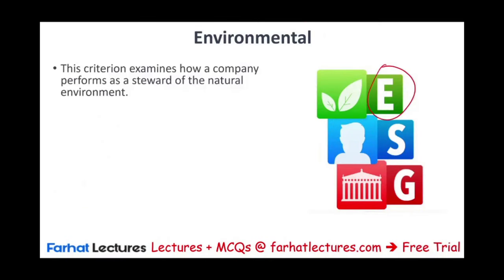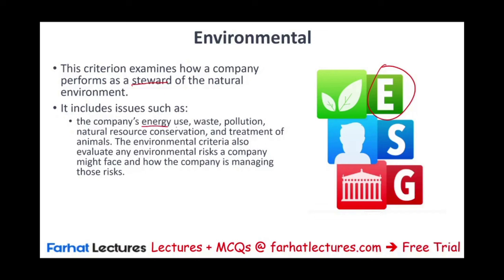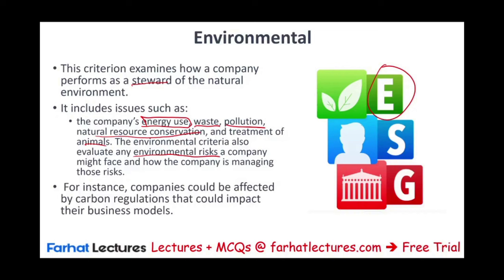The E in ESG is the environmental element — it tells us how a company performs as a steward of the natural environment. We work, we produce, we pollute. How does the company use energy? Do they conserve energy? How do they treat waste, pollution, natural resource conservation, and treatment of animals? This criteria also evaluates environmental risks a company might face — for example, oil companies like British Petroleum — and how well they are mitigating those risks, such as carbon regulations that could impact their business model.